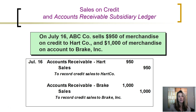To look at the use of a receivable subsidiary ledger, we're going to look at this example. On July 16th, ABC sells $950 of merchandise on credit to Hart, and $1,000 of merchandise on account to Break. We're going to ignore the cost of goods sold side of this transaction and just focus on the receivable and the revenue.